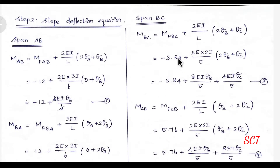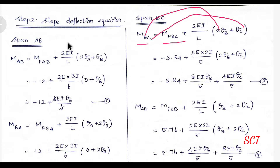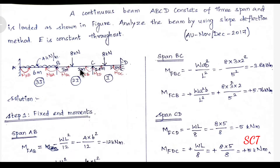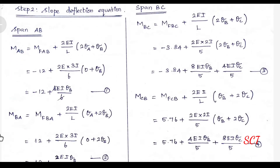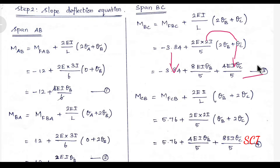Now let's go to span BC. In span BC, I have 2i. M_BC: B value is 2θ, C value is single θ. M_BC is minus 3.84. Substituting: 2EI/L with 2i, so 2 into 2 is 4, divided by 5. We get 8EI·θB divided by 5, plus 4EI·θC divided by 5, minus 3.84. This is equation number 3.